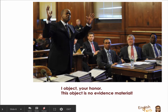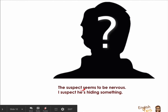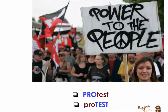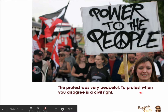Let's see another example. The suspect seems to be nervous. I suspect he's hiding something. So the suspect is the noun — that was first — and I suspect was the verb that came afterwards. We still have one more: The protest was very peaceful. To protest when you disagree is a civil right. First the noun, the protest, and to protest is the verb.